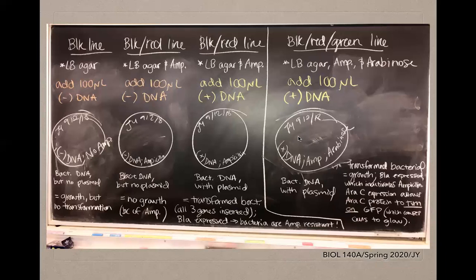On the fourth plate, not only will you have bacterial growth due to ampicillin resistance, but the cells should also be able to fluoresce. This is because this plate contains arabinose sugar — it contains agar and ampicillin, but also arabinose. The RSC protein is expressed and activates GFP, which is green fluorescent protein, observable under ultraviolet light.